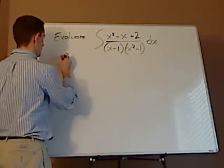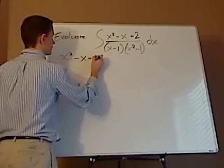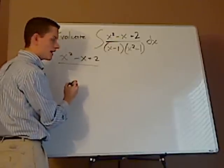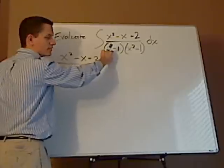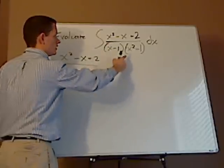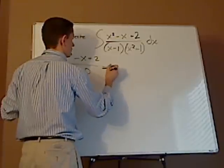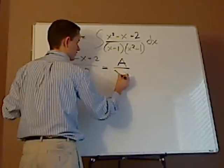So you have x squared minus x plus 2 over, and what I'm going to do is I'm going to just put the LCD. You know what the LCD is. x, x minus 1, x squared plus 1 equals some number. I don't know. I've got to try to find it.